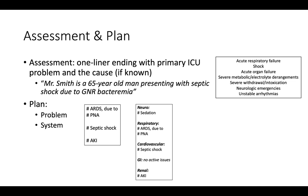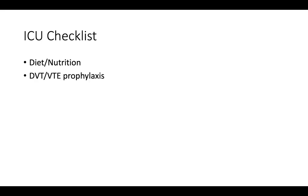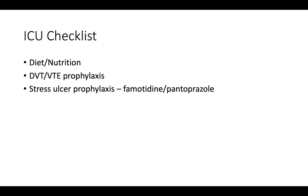After the plan is completed, ICU presentations should end with a brief ICU checklist, which ensures that patients are receiving appropriate evidence-based supportive care. The ICU checklist typically includes: are we feeding the patient? Is the patient receiving DVT or VTE prophylaxis? Is the patient receiving stress ulcer prophylaxis — famotidine or pantoprazole — which is typically provided to all intubated patients? Code status, and the patient's contact, proxy, or MDPOA.